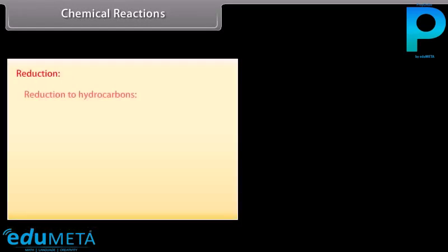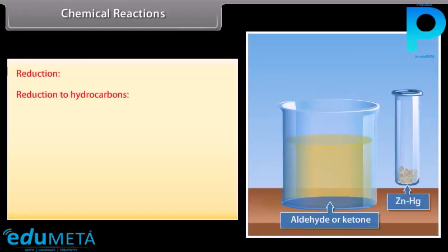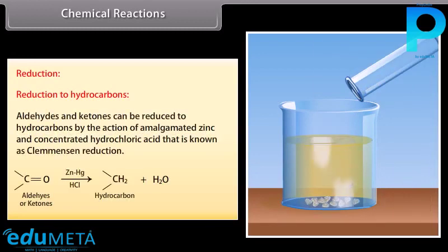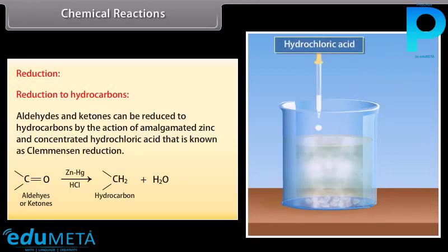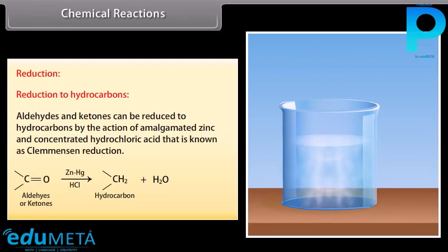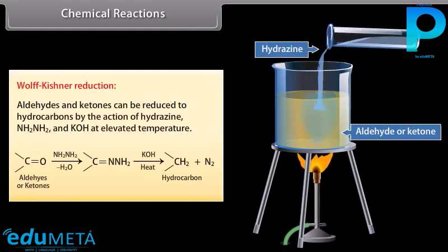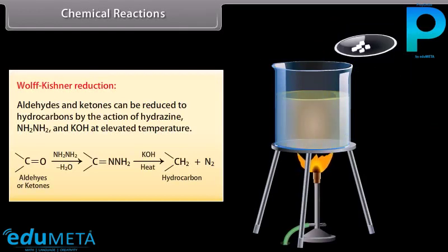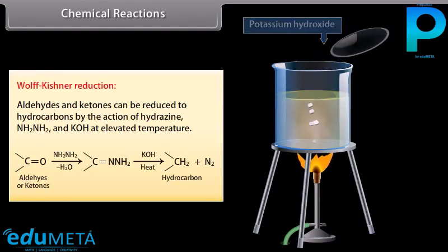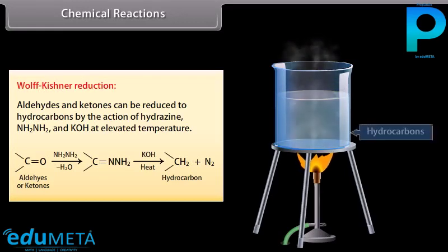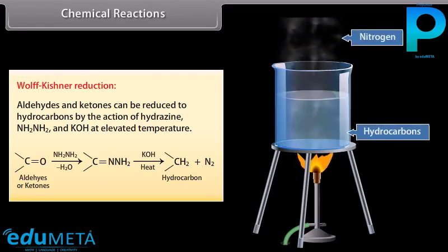Reduction. Reduction to hydrocarbons: aldehydes and ketones can be reduced to hydrocarbons by the action of amalgamated zinc and concentrated hydrochloric acid; this is known as Clemmensen reduction. Wolff-Kishner reduction: aldehydes and ketones can be reduced to hydrocarbons by the action of hydrazine and potassium hydroxide at elevated temperature.